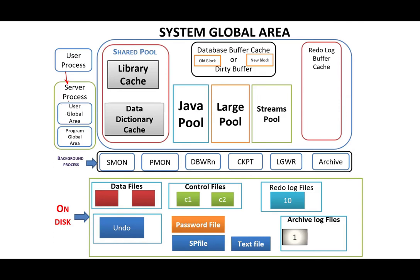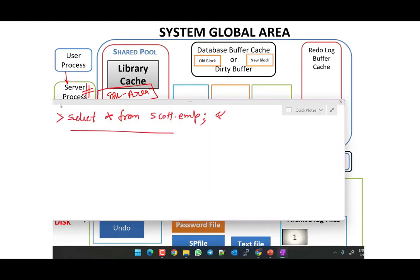The server process generates a hash value. The hash value is a hexadecimal value which is the reference for each and every query. The server process checks if a SQL area is already available for the same query; if yes, it will work on that. Otherwise, if the SQL area is not available, the SQL statement flows through three steps.